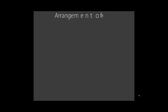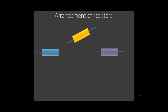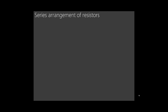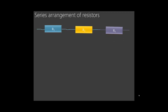We want to expound more on the arrangement of resistors. Looking at these resistors, we basically have two ways of arranging them. One way is the series arrangement, where you connect them end to end, one after another — where one resistor ends is where the other starts. These are three resistors connected in series.